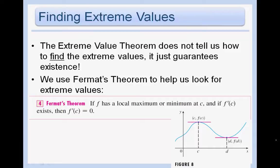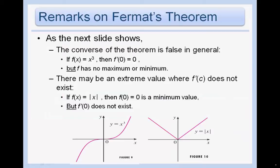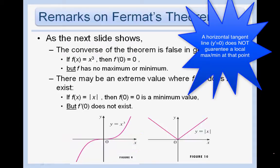We can use Fermat's Theorem to help look for extreme values. It states: if f has a local max or min at c, and if f′(c) exists, then f′(c) = 0. In other words, at any local max or min, the tangent line is horizontal. But do not confuse this with the converse — a horizontal tangent line does not necessarily guarantee a local max or min.